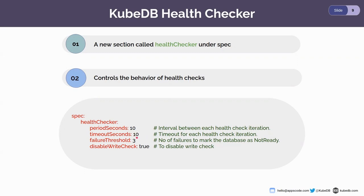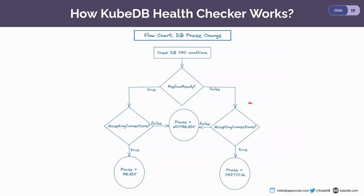There is also a field called failure threshold, which contains the number of failures to mark the database as not ready. If your database has only two failures and you provide the failure threshold as three, then it won't be considered as not ready. There is also a field called disable write check — by default, KubeDB checks for writes in the database, but if you don't want to perform write checks, you can disable it by setting it to true.